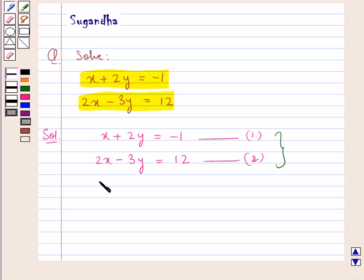From equation 1, we have x is equal to minus 2y minus 1.